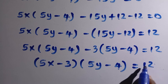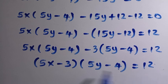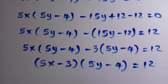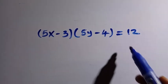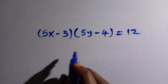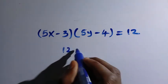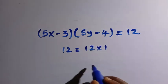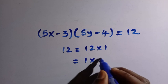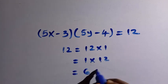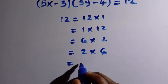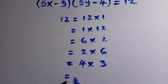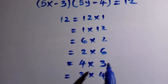We have to consider the factors of 12, and we have restricted ourselves to positive integers. The positive factor pairs of 12 are: 12 times 1, 1 times 12, 6 times 2, 2 times 6, 4 times 3, and 3 times 4.